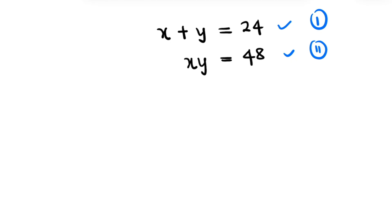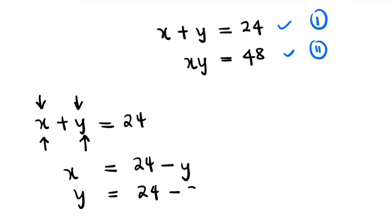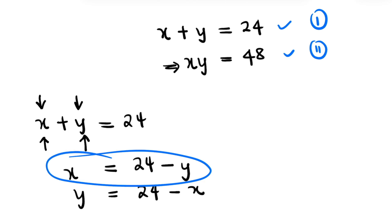Going into equation 1, where we have x plus y is 24, we can make one of the variables the subject of the formula. If we are trying to make y the subject, we subtract x from both sides, so x is going to be 24 minus y, or y is going to be 24 minus x. Whichever we have made the subject of the formula, we are going to substitute into the second equation to find the other variable. So let us go with x equals 24 minus y.